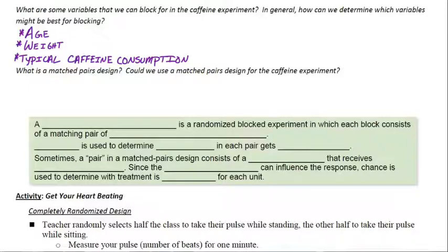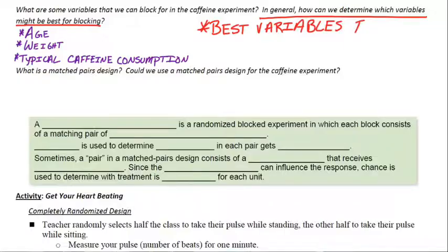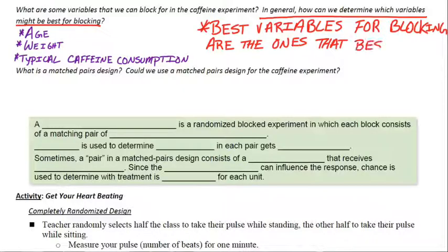So there's multiple things to consider blocking for within the caffeine experiment. What would be the best variable for blocking? How do you choose it? In general, which variable is going to be the best predictor of your response? So the best variables for blocking are the ones that best predict the response.